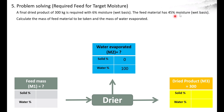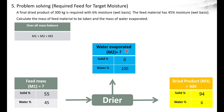The feed material has 45% moisture. Coming to the dried product, it has 6% moisture, so the remaining 94% would be the solid. The amount of water evaporated is not given in the question — we are asked to calculate it. Now let's move on to writing the mass balance equation.